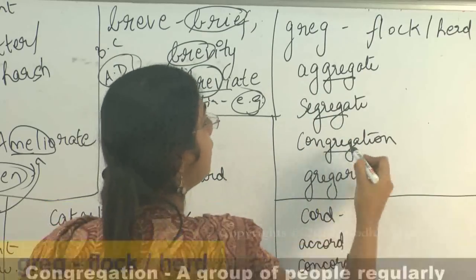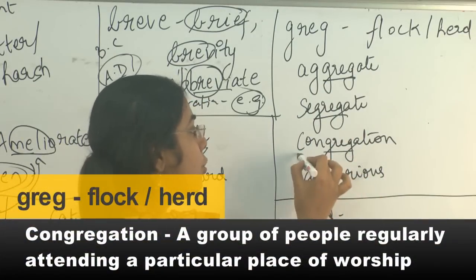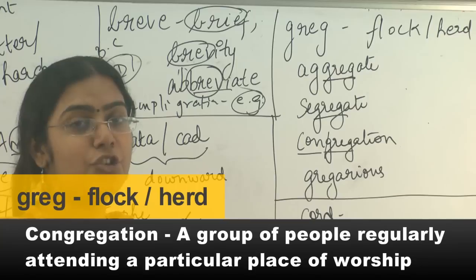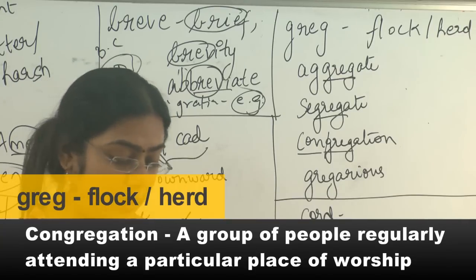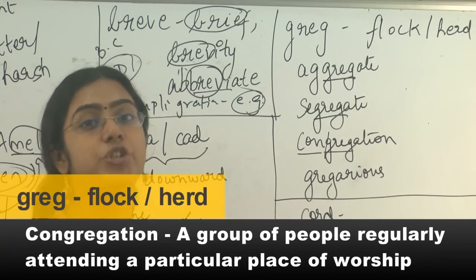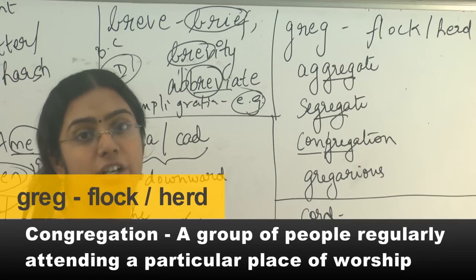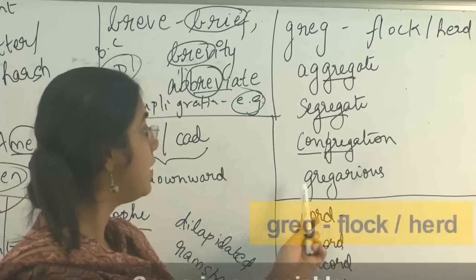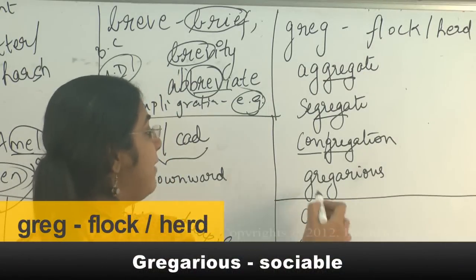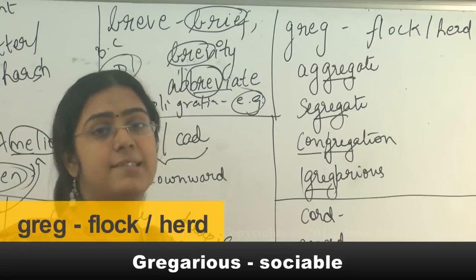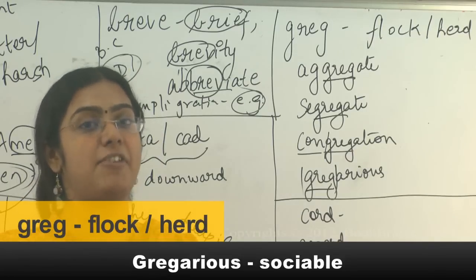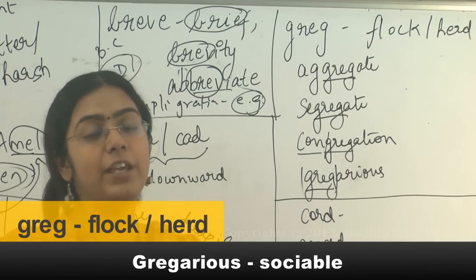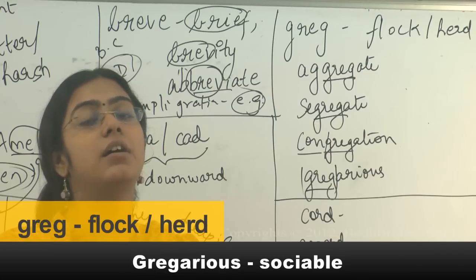Then there is congregation. 'Con' is the root word for same, so it means same group. A congregation is typically a church group — they all belong to the same church and they congregate every Sunday. Gregarious means being social — you tend to remain in groups.